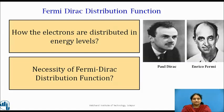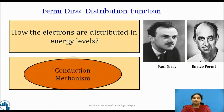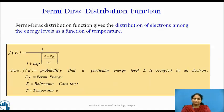In fields like electronics, one particular factor which is of prime importance is the conductivity of materials. This characteristic of the material is brought about by the number of electrons which are free within the material to conduct electricity. As per the energy band, these are the number of electrons which constitute the conduction band of the material considered. Thus, in order to have an idea over the conduction mechanism, it is necessary to know the concentration of the carriers in the conduction band. It is given by F(E) = 1 / (1 + e^((E − E_F) / KT)).